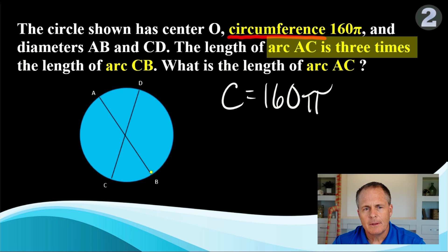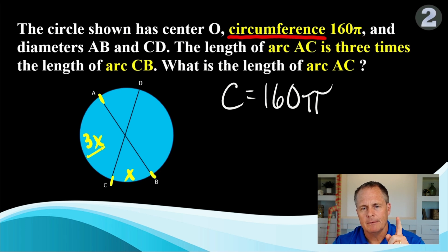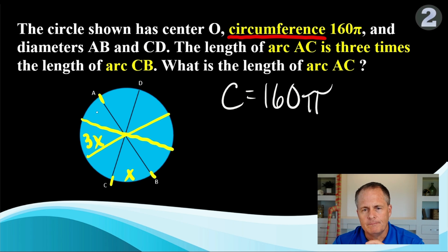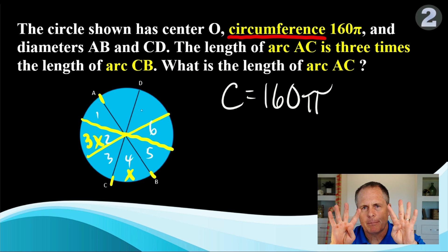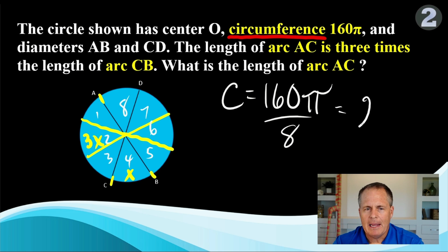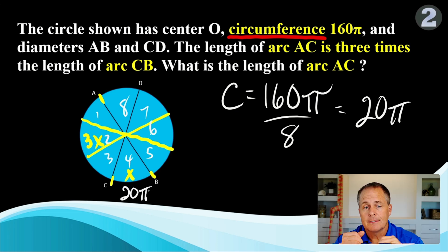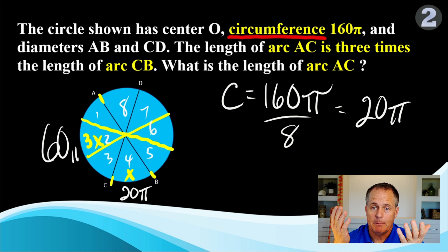Notice that arc AC is three times the length of arc CB, so let's mark that and see what we can do. The circle is really being broken into eight parts, so arc CB is 160π divided by 8 — that's 20π. So one slice is 20π and arc AC is triple that, so it's going to be 60π.